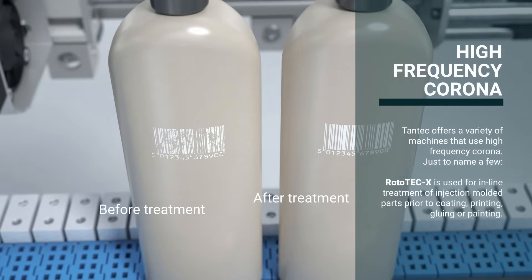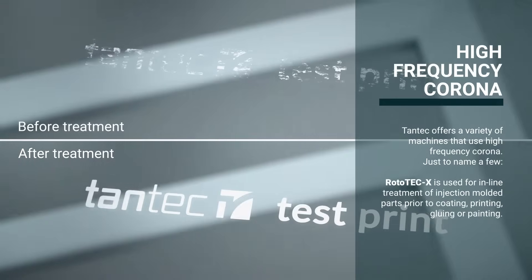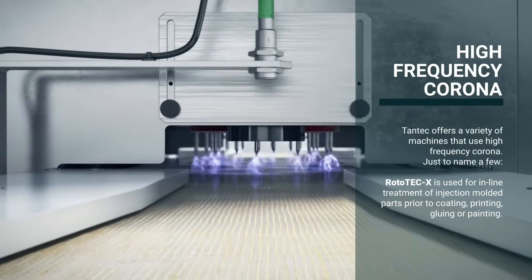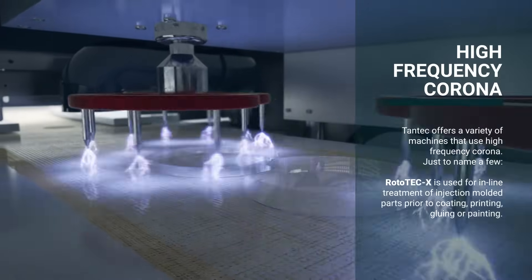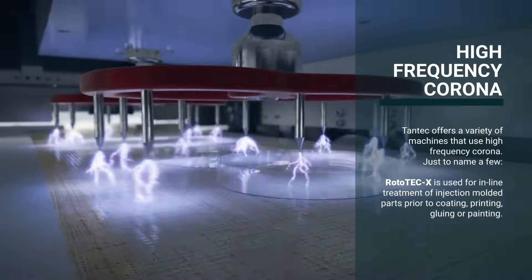Tantec offers a variety of machines that use high-frequency corona. Just to name a few, Rototec-X is used for in-line treatment of injection-molded parts prior to coating, printing, gluing, or painting.